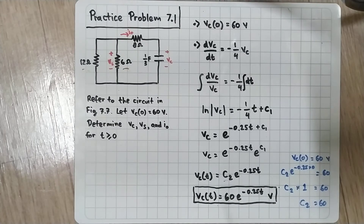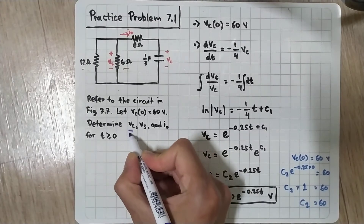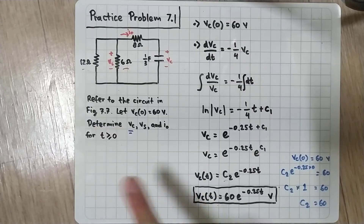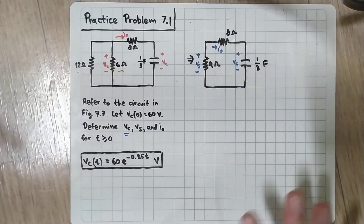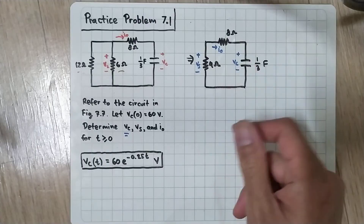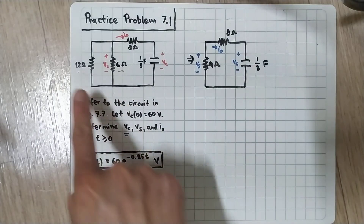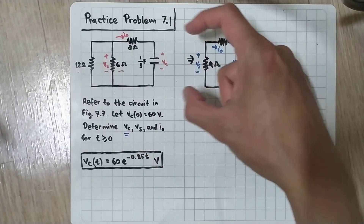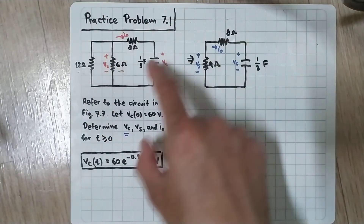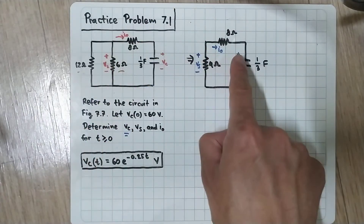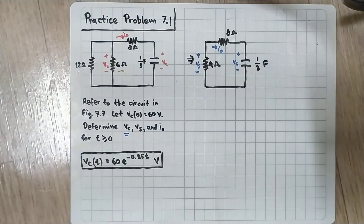We have found VC. We still need to find VS and I0. Cleaning the board and redrawing the first simplified circuit: 12Ω parallel with 6Ω becomes 4Ω. The voltage labels are placed — VS appears across the parallel branch, and VC is across the capacitor.